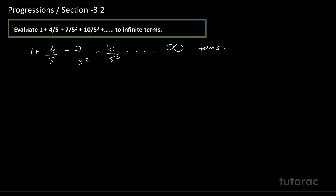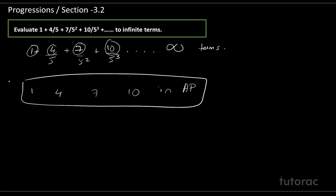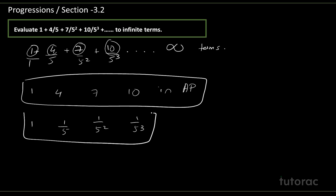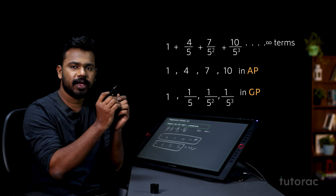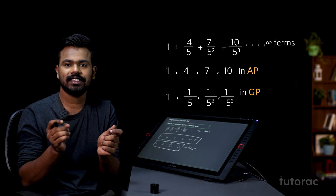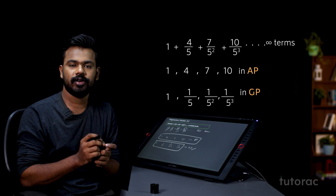The main problem students face is identifying whether a given series is an AGP. Here, this is an AGP. Look at the numerators: 1, 4, 7, 10 — these are in AP. The denominators are 1, 1/5, 1/5², 1/5³, which means they are in GP. So you have a series that can be split into an AP and a GP.